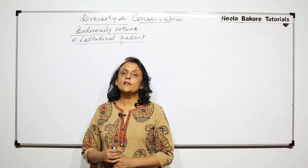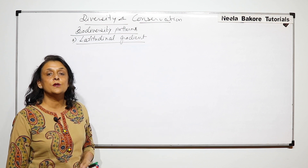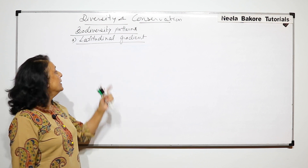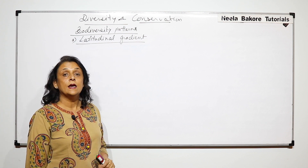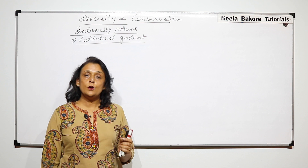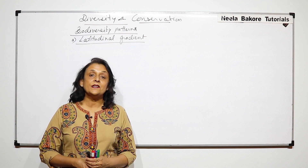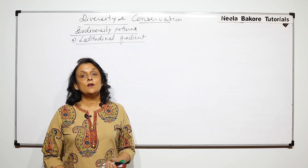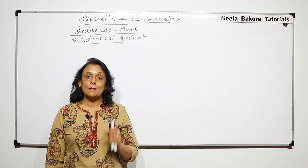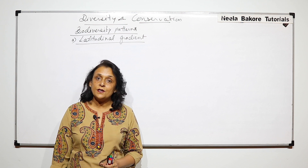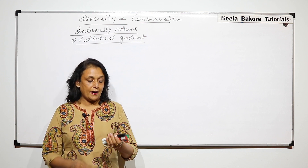In the previous part we talked about one particular biodiversity pattern, and that was the latitudinal gradient. That means when we move from the equator towards the pole, how species diversity changes, and we also saw the tropical and temperate region comparison — what exactly favors a richer diversity in the tropical part.